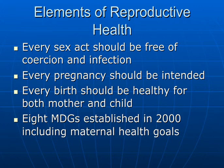The last part of this lecture will be on the elements of reproductive health, and most of this is taken from the text. What are the elements of reproductive health? They are that every sex act should be free of coercion and infection, every pregnancy should be intended, every birth should be healthy for both mother and child, and the 8 MDGs established in 2000 include maternal health goals.